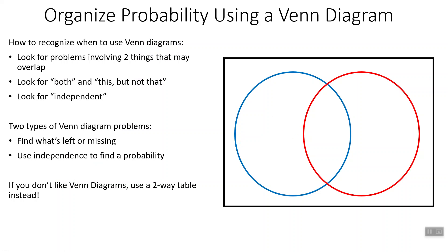A Venn diagram generally has two circles. Each circle stands for one thing, so Venn diagram problems usually involve two things that may be overlapping — in other words, both could be true at the same time. We can also have a 'this but not that' scenario, which is the outside part. We can also look for terms like 'independent,' which tells us how to fill in parts of the circles. Generally we have two types of Venn diagram problems: finding what's left over or missing, or using independence to find a probability.